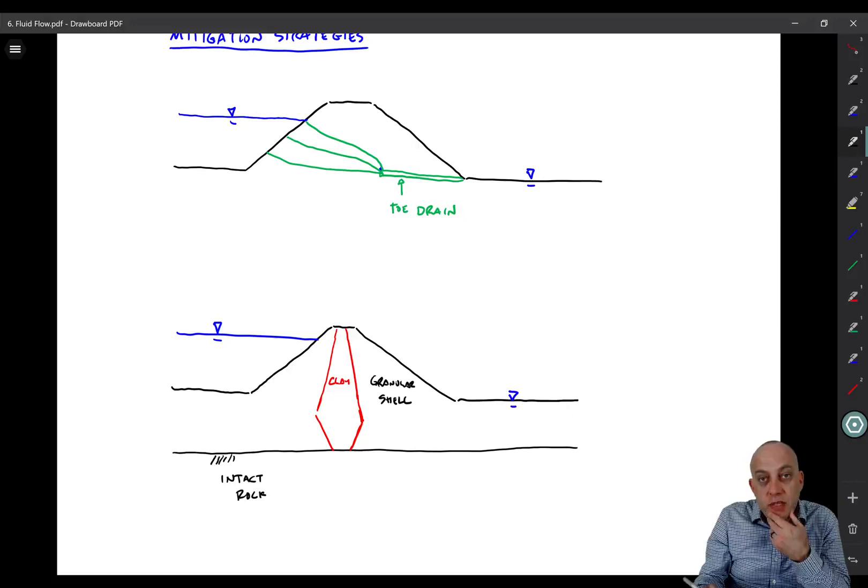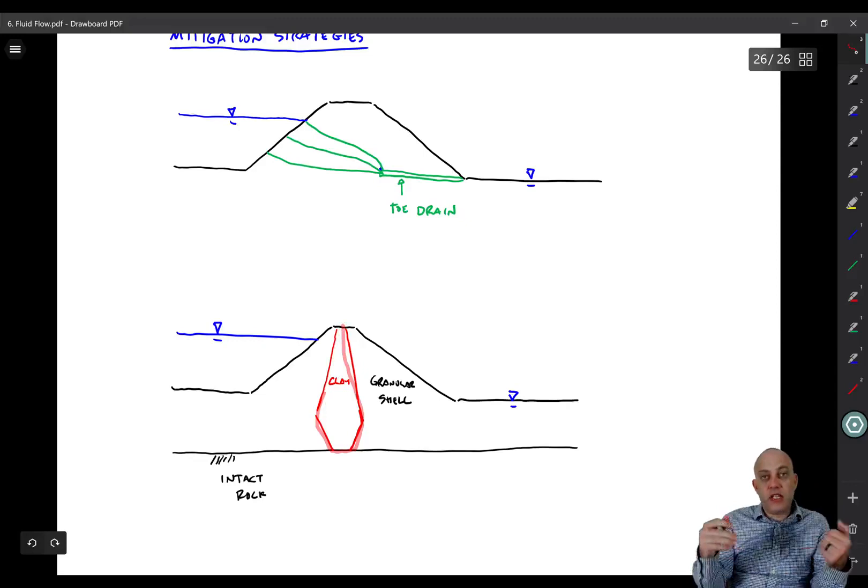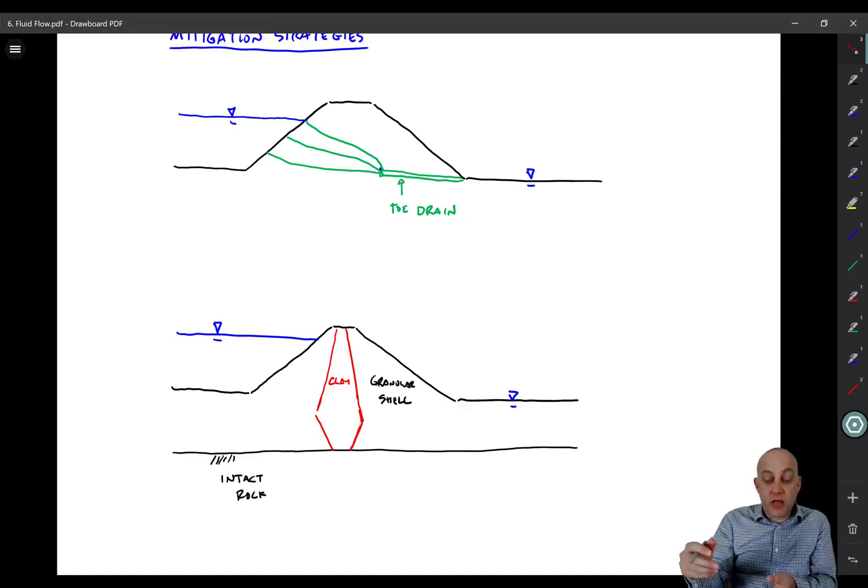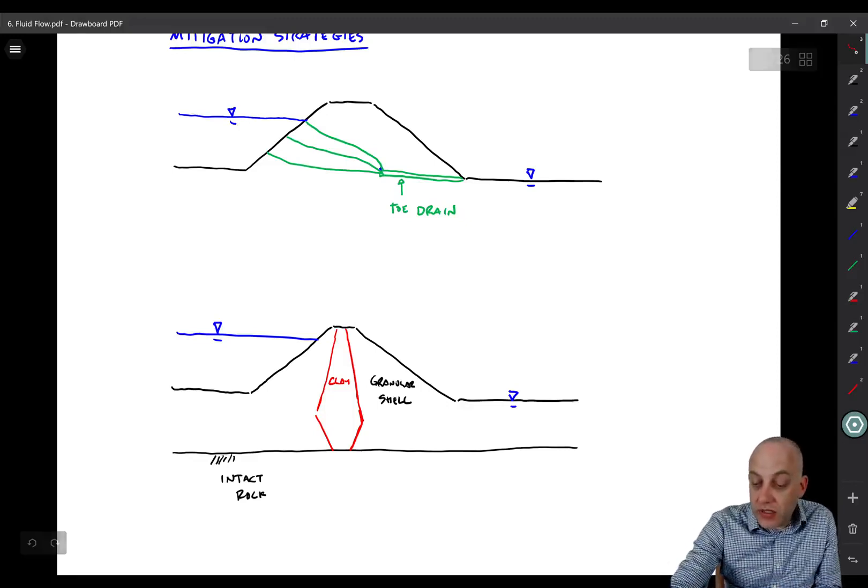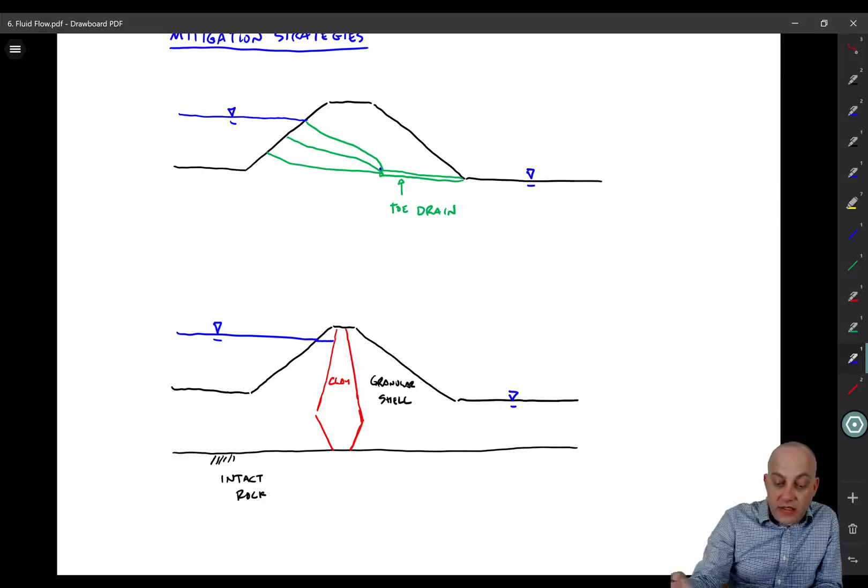Now this is a complicated one because we no longer have a uniform hydraulic conductivity. When we've been sketching our flow nets so far, we've assumed by making all of the cells square, we're assuming hydraulic conductivity is constant. So usually what we'll do is recognize that the vast majority of the head loss is going to happen here in the clay because the granular shell has a really high permeability compared to the clay, probably many orders of magnitude, four or five orders of magnitude lower.